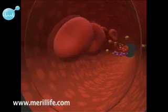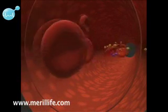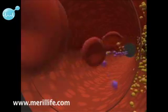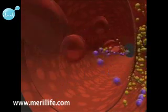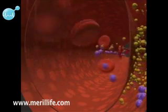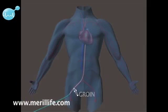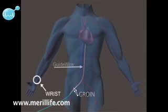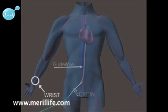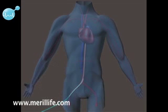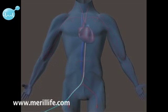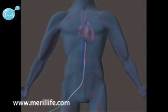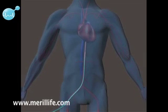Coronary angioplasty is a method to open or widen the coronary arteries which become blocked because of fatty and cholesterol deposits. During this procedure, a small cut is made at the groin or wrist, and after numbing that area by application of local anesthesia.